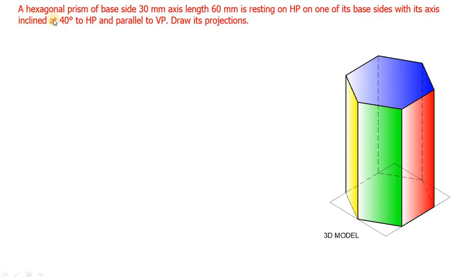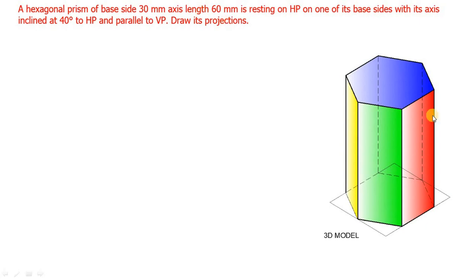This is the question: a hexagonal prism of base side 30mm. The base side is 30mm, and it will have 6 base sides, so all the sides are 30mm. The axis length is 60mm - the length of this particular hexagonal prism is 60mm. The axis is nothing but an imaginary line that joins the center of the top face and the bottom face. So the total length of the hexagonal prism will be 60mm.